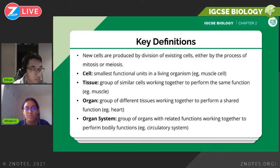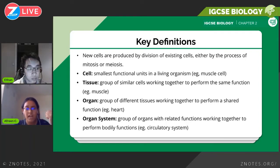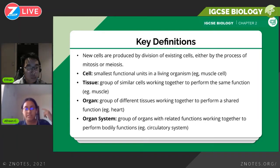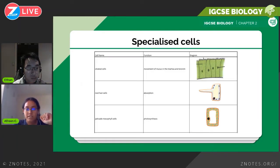You need to know examples of each: muscle cells and blood cells for cells; heart, brain, and stomach for organs; and circulatory and digestive systems for organ systems. And that's about it for key definitions.